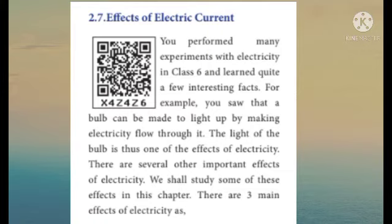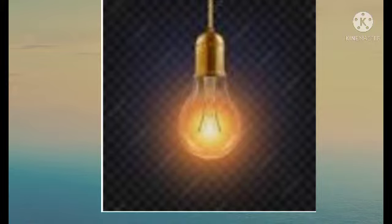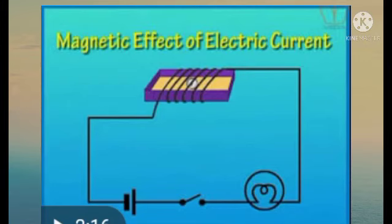Light is produced by making electricity flow through a bulb — the light of the bulb is one of the effects of electricity. There are several other important effects of electricity we shall study in this chapter. There are three main effects of electricity: the heating effect, the magnetic effect, and the chemical effect.